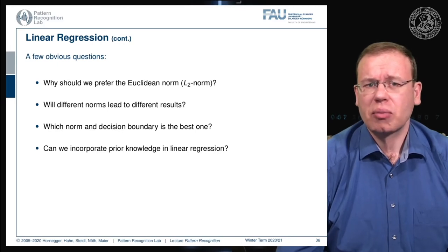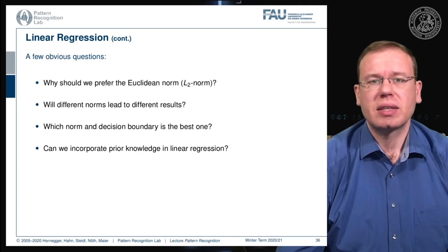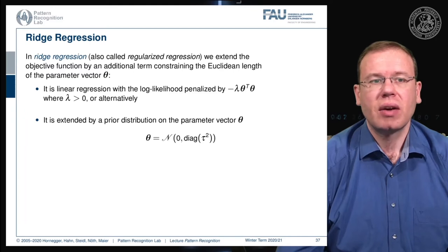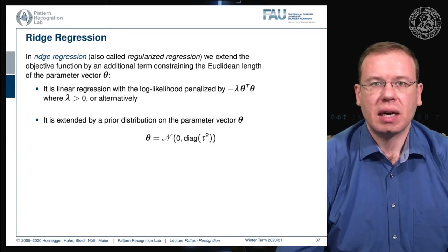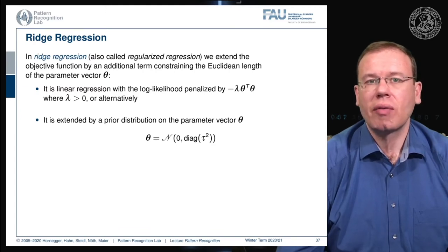This leads to the concept of ridge regression or regularized regression where we extend the objective function with an additional term. For example, you can constrain using the Euclidean length of our parameter vector theta. You have linear regression with the log likelihood penalized by minus lambda theta transpose theta, the L2 norm of theta, with lambda greater than zero. Alternatively, as we will see in an equivalent formulation, you could extend our estimation with a prior distribution on the parameter vector theta. We assume theta to be distributed in a Gaussian way with zero mean and a diagonal covariance matrix with some factor tau squared as the variance.